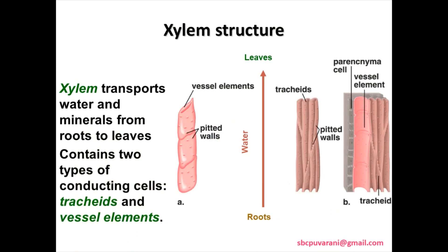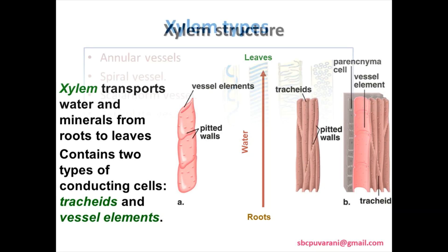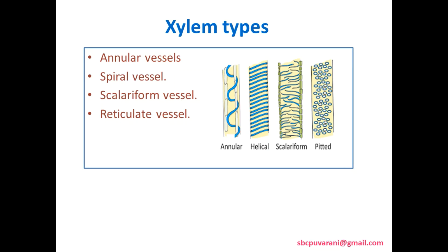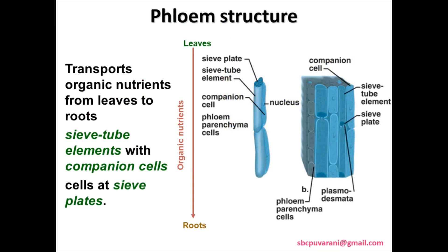Now we are showing the pitted wall xylem as well as the tracheids type of xylem. Xylem types include annular vessel, spiral vessel, scalariform vessel and reticulate vessel.